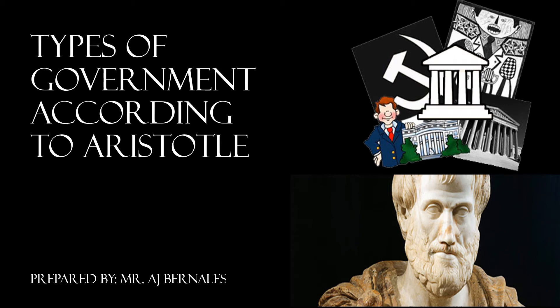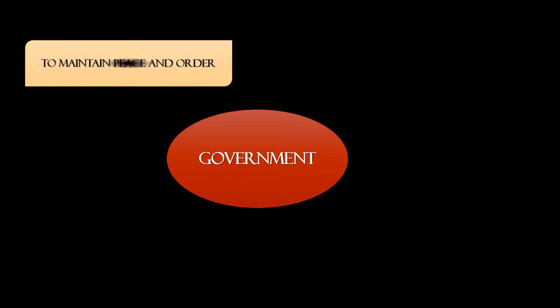Today, we will discuss the different types of government according to Aristotle. Government is one of the entities or elements of the state. According to social contract theory, there are basic purposes of government. The first is to maintain peace and order, or government is the one who maintains the public safety of the society.